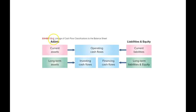By looking at Exhibit 12.4 on page 455 of your textbook, when we're building the investing activities section of a cash flow statement, we want to take a look at changes in long-term assets and report those changes that resulted from the receipt of cash or the payment of cash.